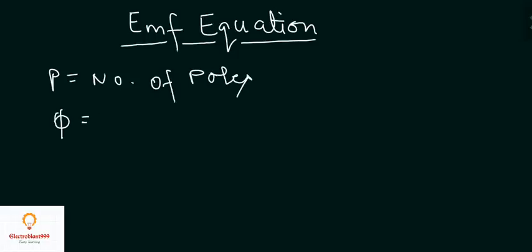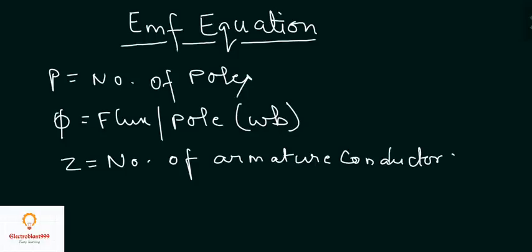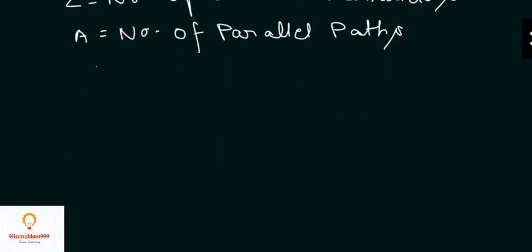Phi is the flux per pole given in webers. Z is the number of armature conductors. A is the number of parallel paths. The number of parallel paths is equal to P for lap winding.